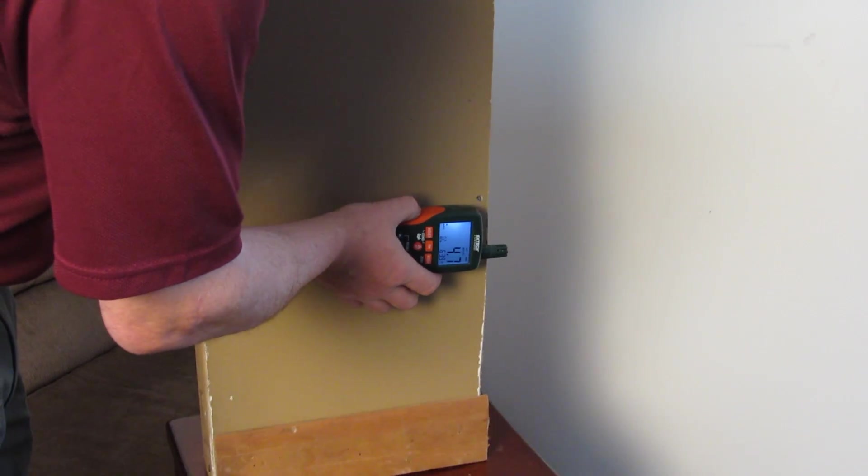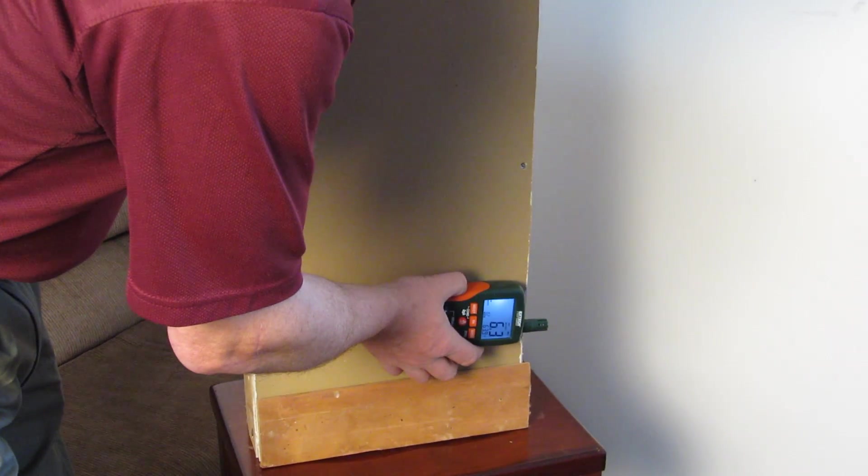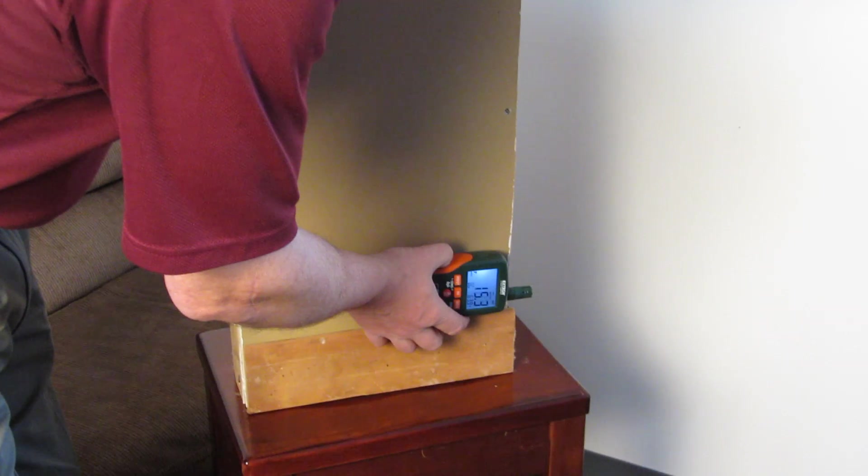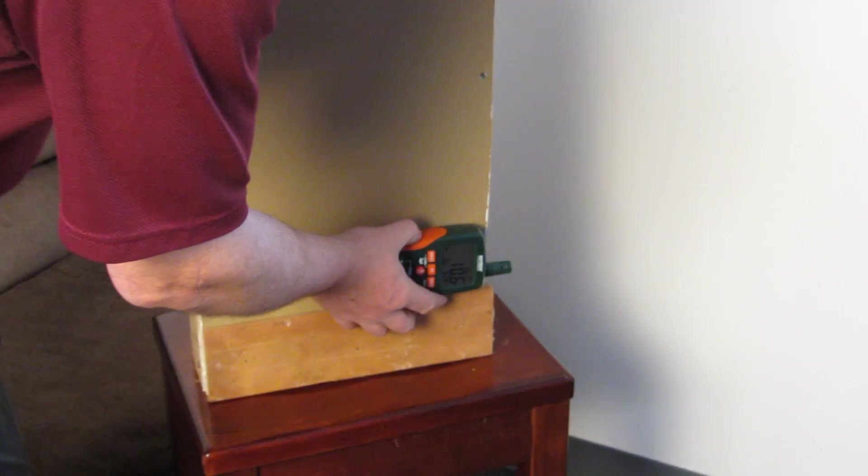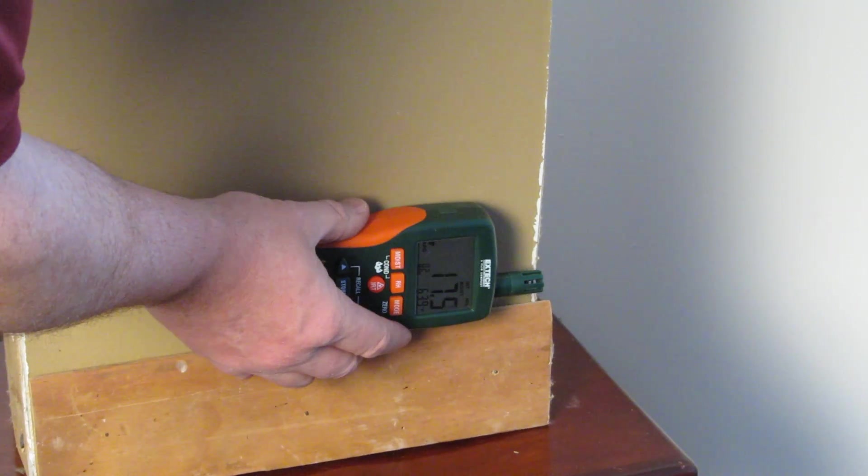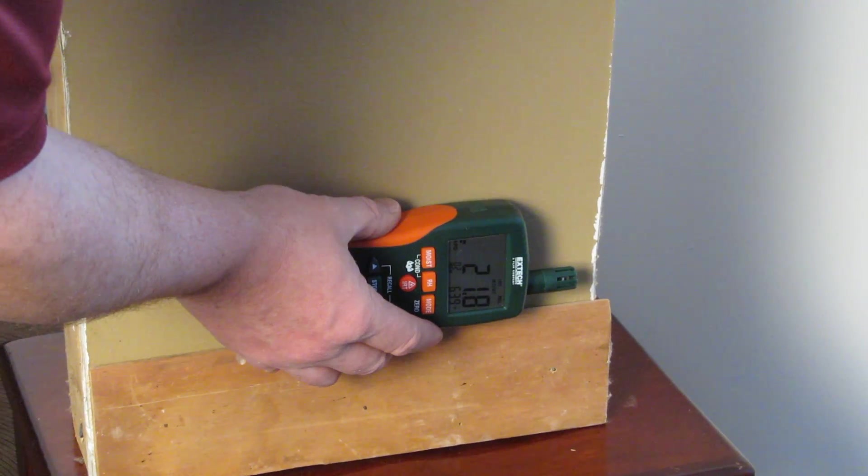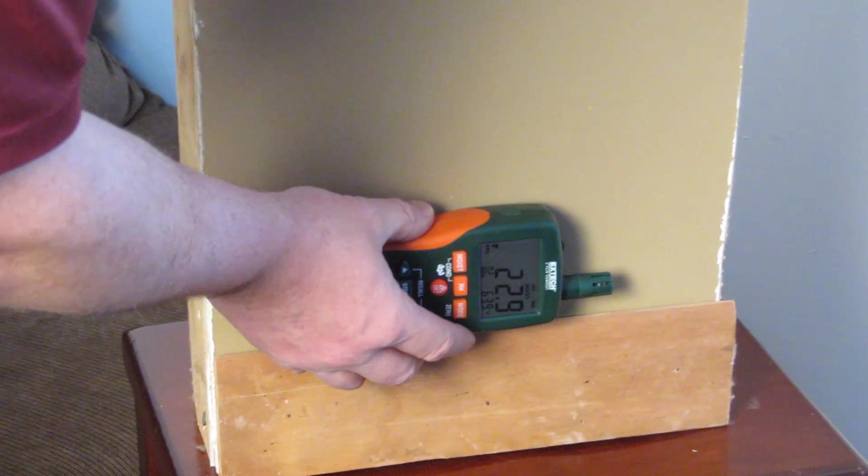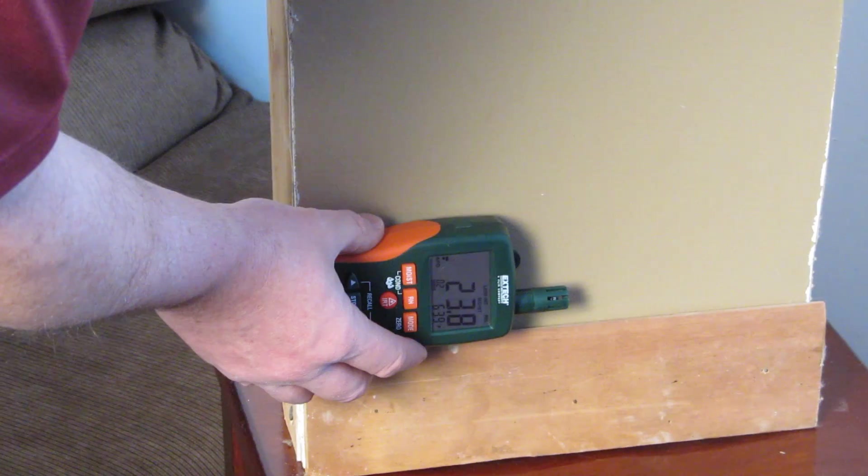As we move it down, we can start seeing it rise. And right now the light on it comes and goes. Right now it's at 17, 20, 21, 22, 23. So this whole area seems to be wet from water.